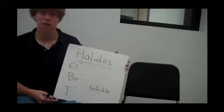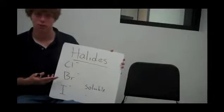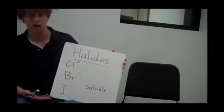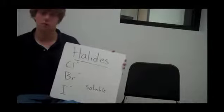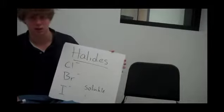Now let's talk about the salts of the halogens: chlorine, bromine, and iodine. All of them are going to be soluble when paired with anything.